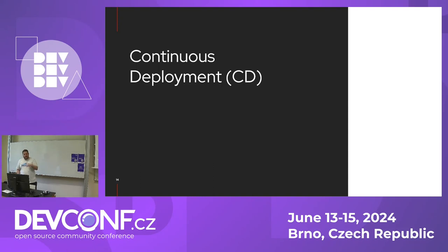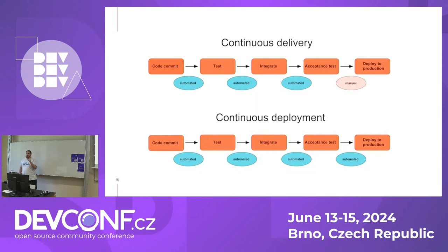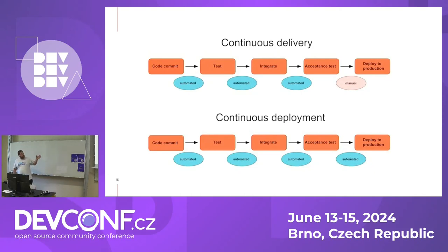What's continuous deployment — the other CD flavor? It's the same as continuous delivery but with no manual trigger. It's fully automated, full auto. So with continuous delivery you have a manual trigger to deploy to production or any environment, whereas continuous deployment is fully automated.